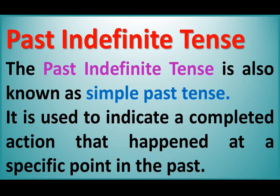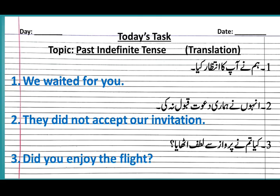Now we will sum up past tense by reviewing its rules, formation, and translation from Urdu to English. Past indefinite tense, also known as simple past tense, is used to indicate a completed action that happened at a specific point in the past. In simple sentences: subject + second form of verb + object. In negative sentences: subject + did not + first form of verb + object.